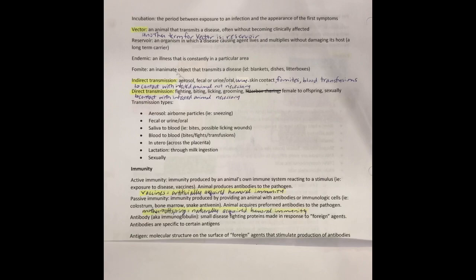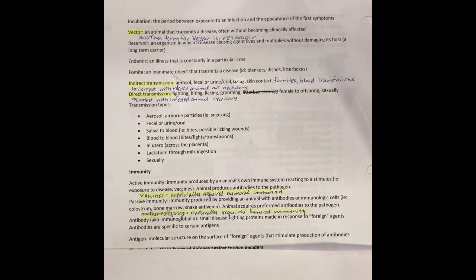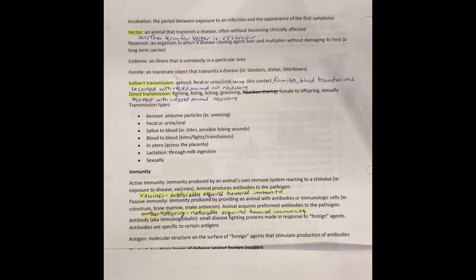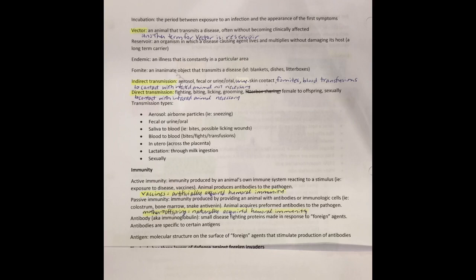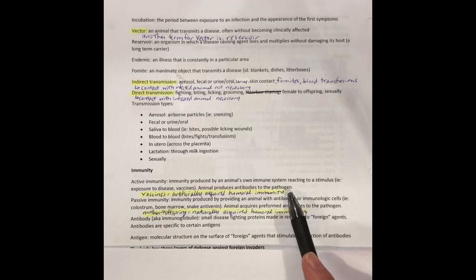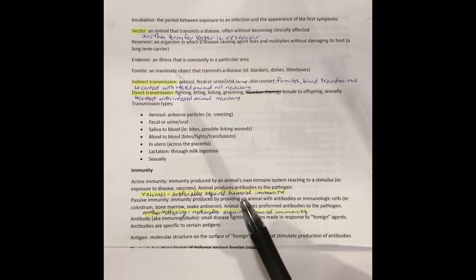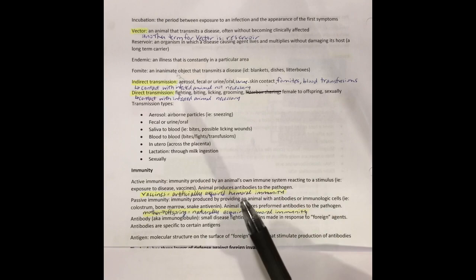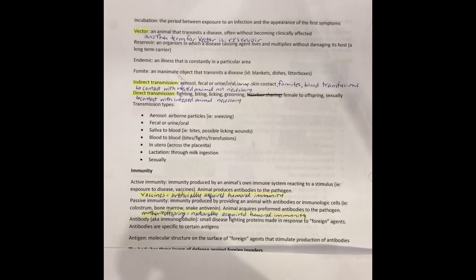Let's talk about immunity specifically. We have two types of immunity: active immunity and passive immunity. Active immunity is where the animal's own immune system has produced the immunity — usually that means the animal is producing antibodies to a pathogen. Remember that 'patho' means disease and 'gen' means causing, so a pathogen is the disease-causing agent. That can be because they were either exposed to the disease directly or because they've been given a vaccine. Passive immunity is immunity produced by providing an animal with the antibodies or immunologic cells.